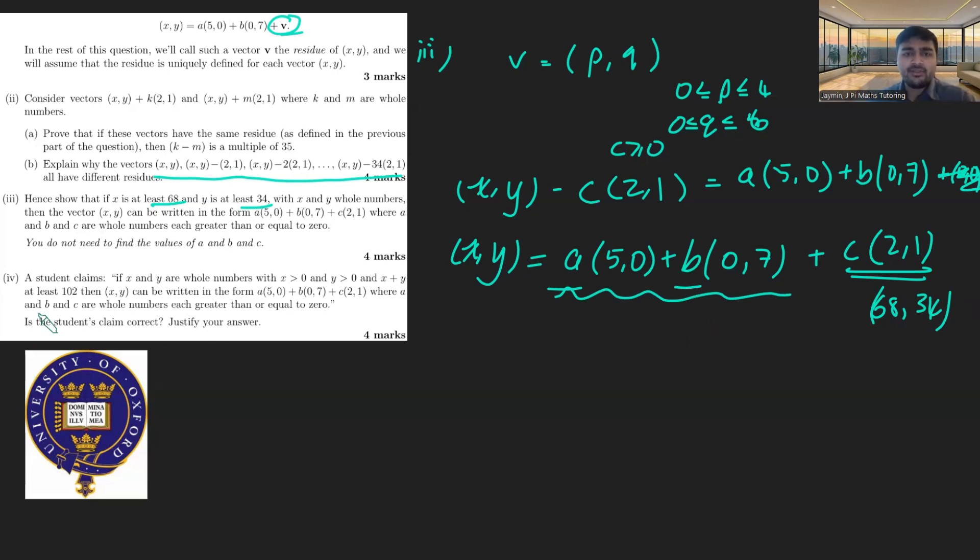Part four, the final part here. A student claims if x and y are whole numbers with x and y positive, and x plus y being at least 102, then (x,y) can be written in this form a(5,0) plus b(0,7) plus c(2,1), where a, b, and c are whole numbers greater than or equal to 0. Is the student's claim correct? Justify your answer.